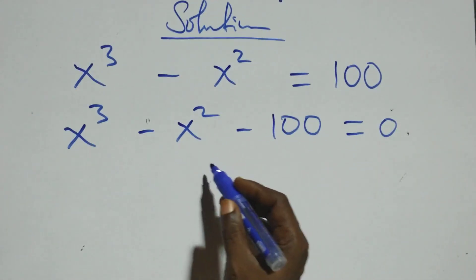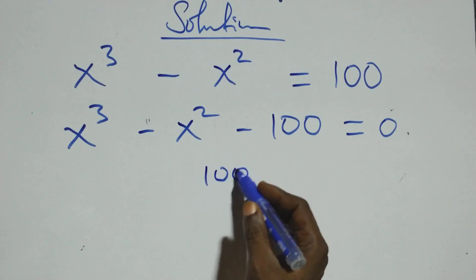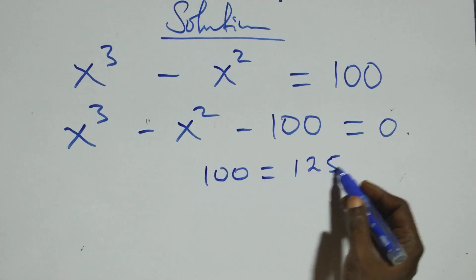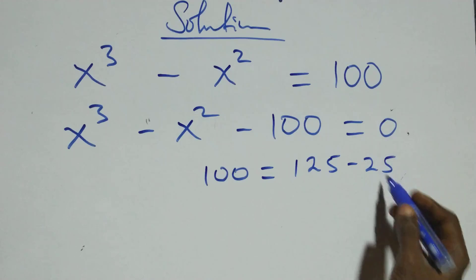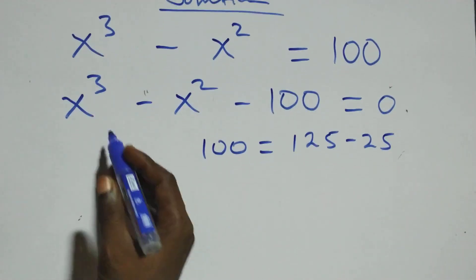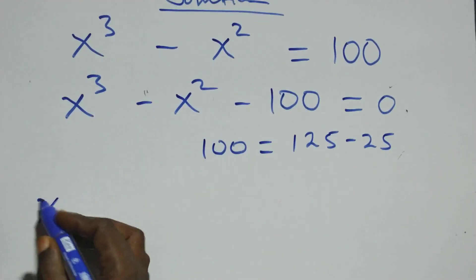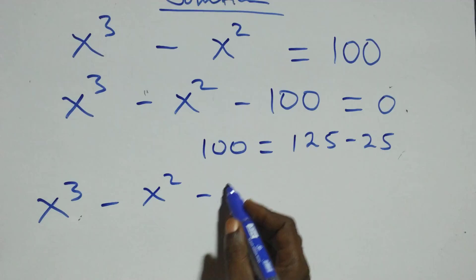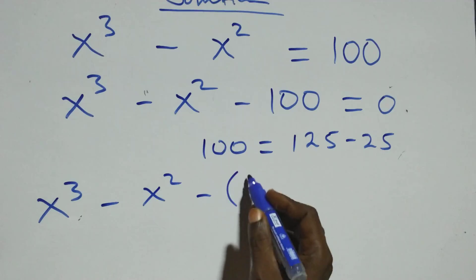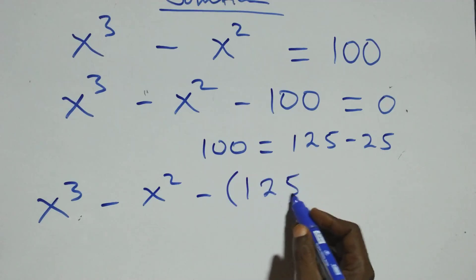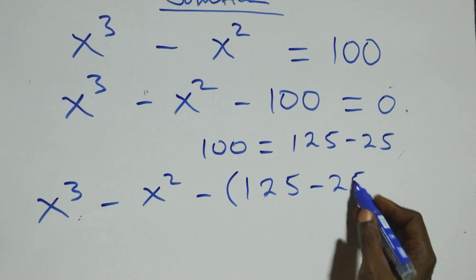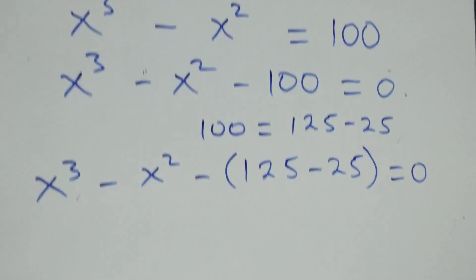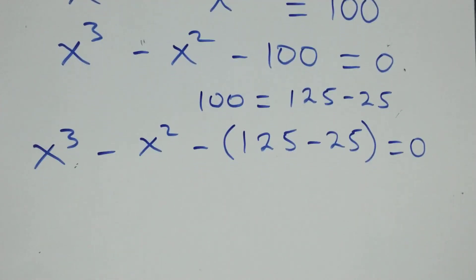For the next step, we can write that number as 125 minus 25, which implies this equation becomes x cubed minus x squared minus, in brackets, 125 minus 25, close brackets, equals to zero.